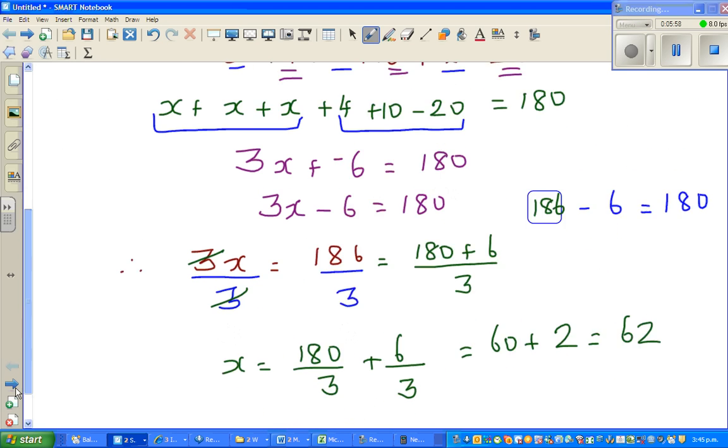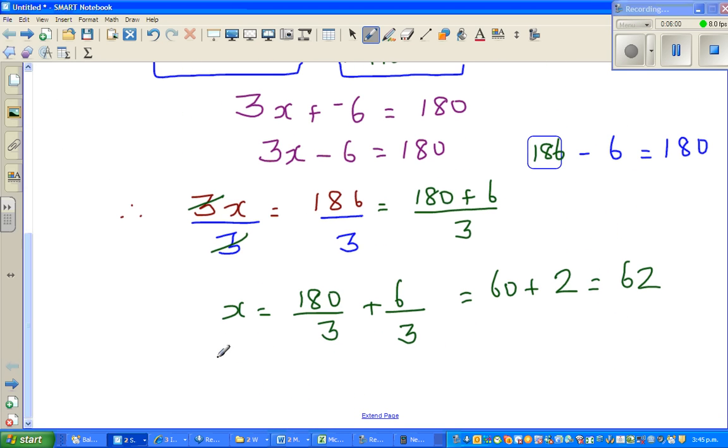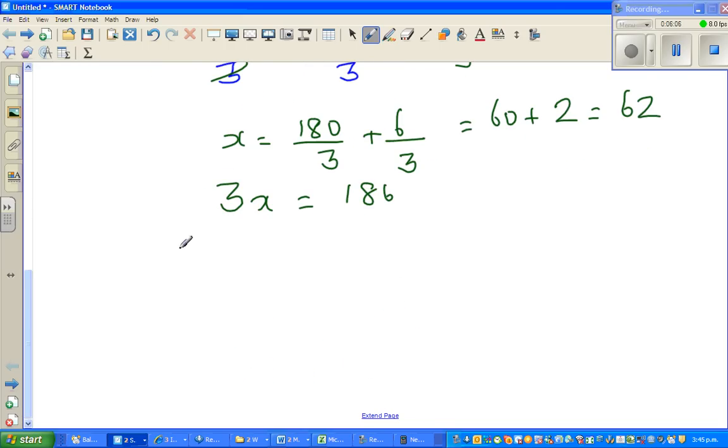So I'll explain this. Suppose if you have 3x is equal to 186. If you think in a different way, you've got 3 lots of x. So x plus x plus x is, you're going to divide this into 3 parts.